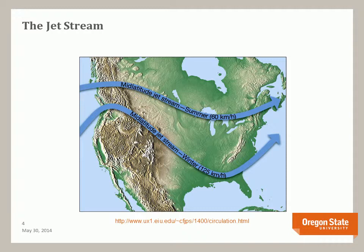During the summer, the jet stream moves to the north and wind speeds decrease. Storms are now directed more to the north, and both California and the Pacific Northwest have typically dry summers.